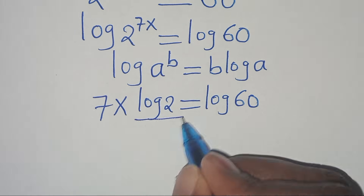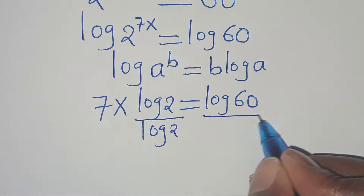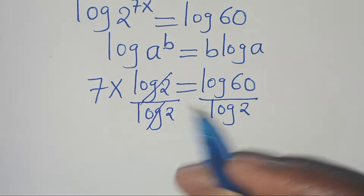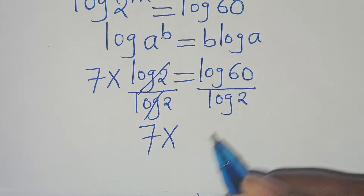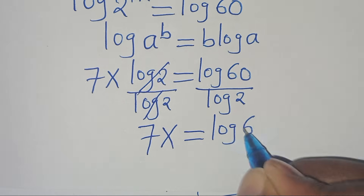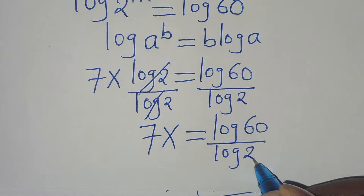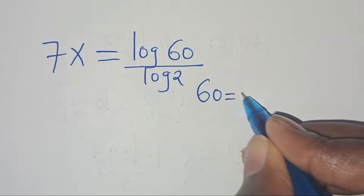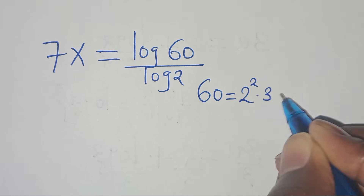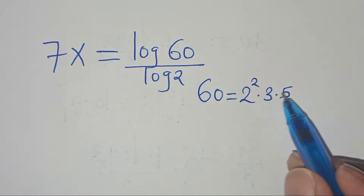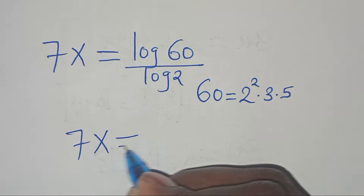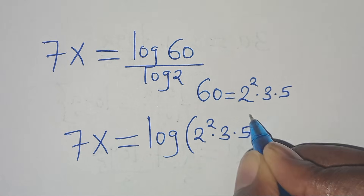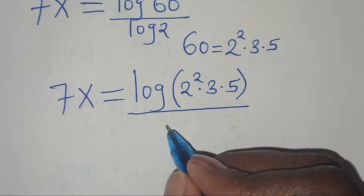Now let's divide both sides by log 2. We simplify log 2 and log 2 so that now we have 7x equals log 60 divided by log 2. The next step is that we can express 60 as 2 squared times 3 times 5. So let's substitute this so that we have 7x equals log of 2 squared times 3 times 5, everything divided by log 2.